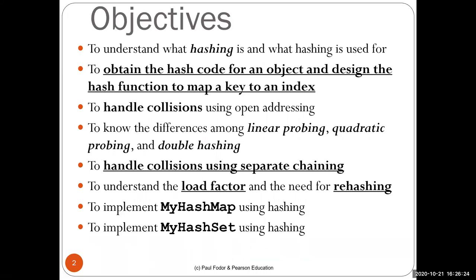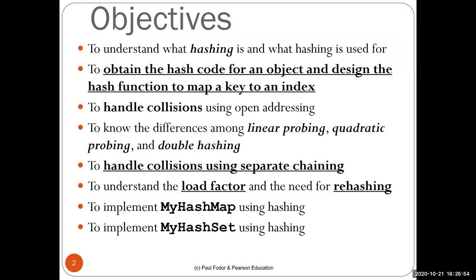The real reason is that in an array we can access elements in constant time. We'll learn how to obtain a hash code for an object and design a hash function to map a key to an index in the table. We'll learn how to handle collisions using open addressing and separate chaining, how to set the load factor, when to rehash, and how to implement a hash map and hash set.